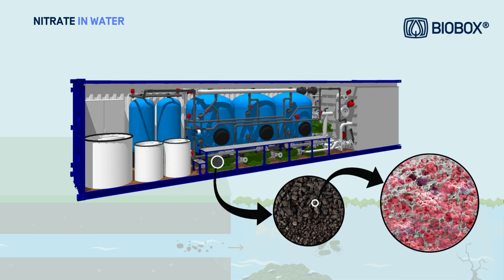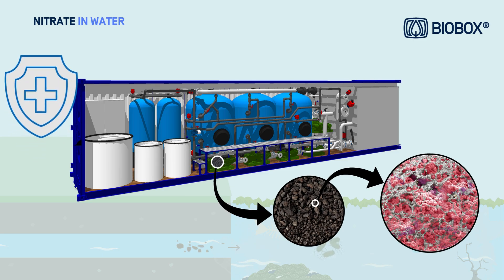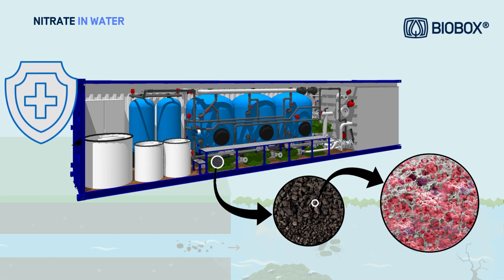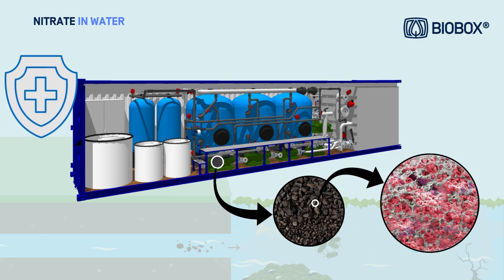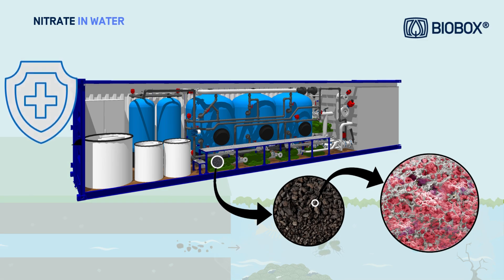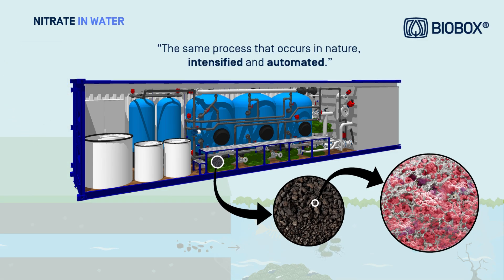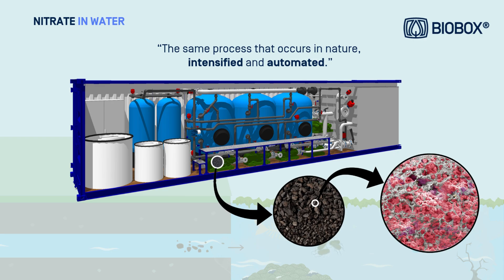classified as Group 1 for food-grade use, that convert nitrate into nitrogen gas, effectively replicating the natural nitrogen cycle. In other words, we imitate nature's process, but in a more intensified and automated way.